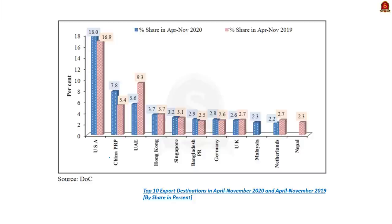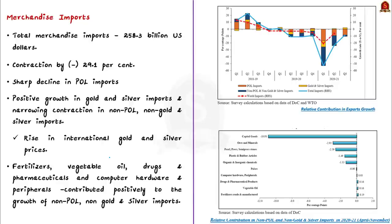Now let us come to the data related to merchandise imports. According to the Economic Survey, total merchandise imports during April-December 2020 amounted to $258 billion, a contraction of 29.1%. This contraction was due to the sharp decline in POL imports, which constitute about a quarter of total merchandise imports. The decline in POL imports pulled down overall import growth. During the same period, there was accelerating positive growth in gold and silver imports and a narrowing contraction in non-POL, non-gold and silver imports.